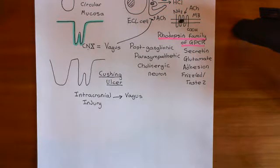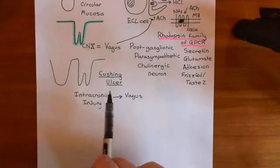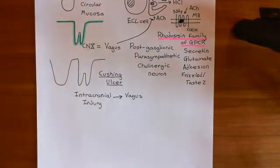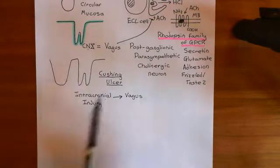Welcome to this next video in which we are discussing acute gastric ulceration. We've just discussed Cushing ulcers, which occur when you have an intracranial injury — an injury on the level of the brain — which then results in the vagus nerves firing inappropriately, causing overstimulation of the parietal cells of the stomach, over-secretion of hydrochloric acid, and this hydrochloric acid burns a hole in the mucosal surface of the stomach. This is known as a Cushing ulcer.